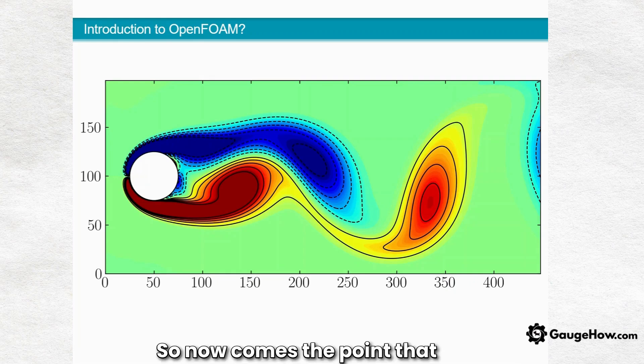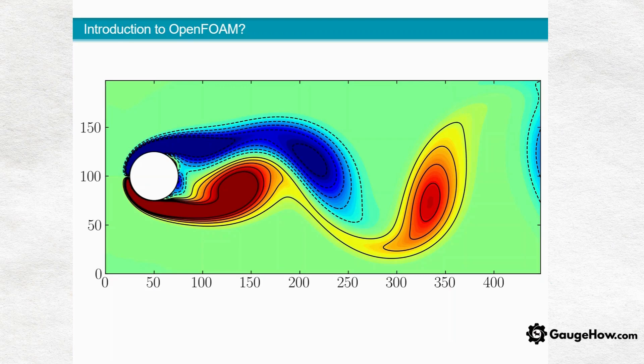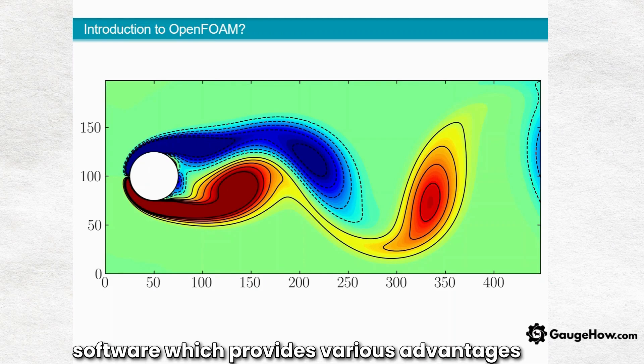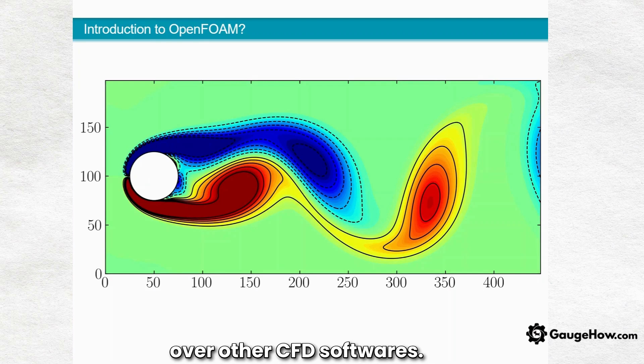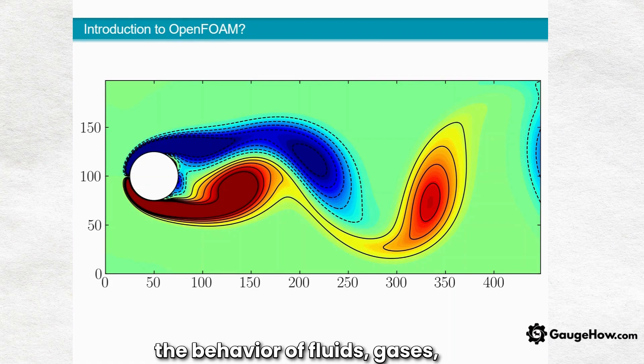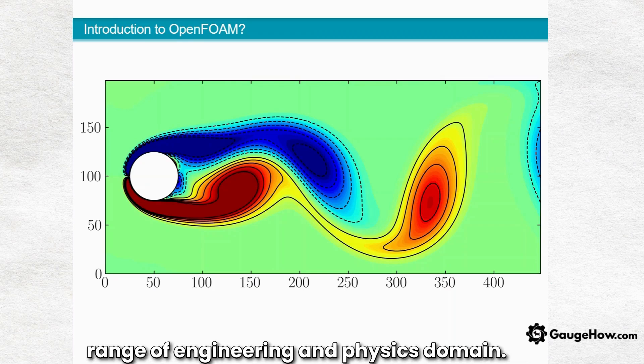Now comes the point of what are the important features related to OpenFOAM that we will discuss. OpenFOAM is an open source software which provides various advantages over other CFD software. OpenFOAM is basically used for simulating the behavior of fluids, gases, heat, turbulence and chemical reactions in a wide range of engineering and physics domains.